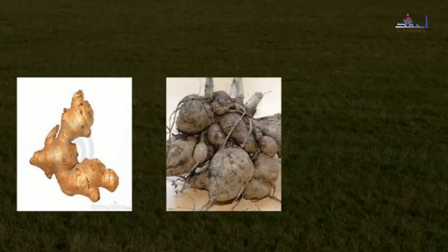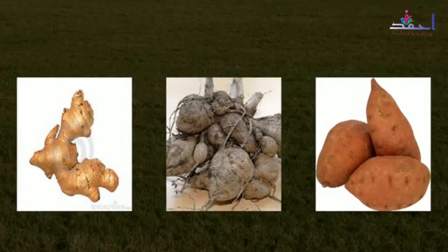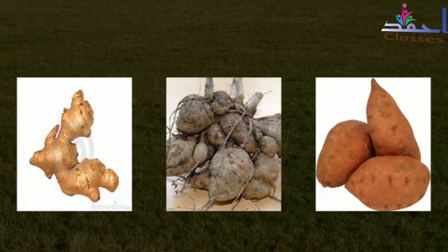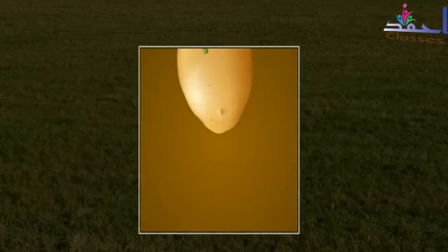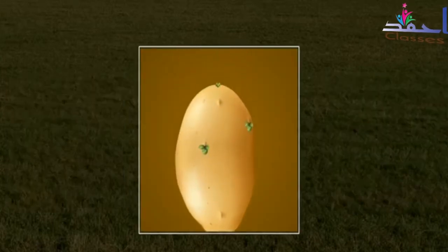Vegetative reproduction in potato. Vegetative reproduction is the process of multiplication in which a portion or fragment of the plant body functions as a propagule and develops into a new individual.